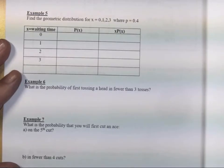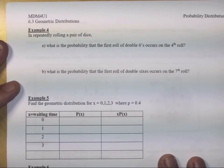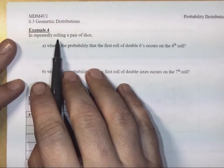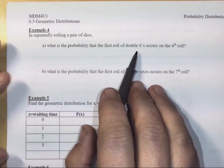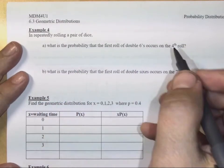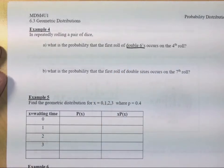Okay, let's go on to example 4 next. In example 4 it says, again, rolling a pair of dice, what is the probability that the first roll of double sixes, not doubles, double sixes, occurs on the fourth roll?